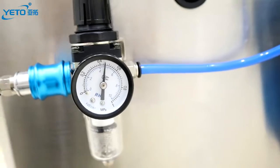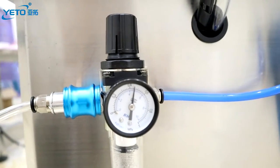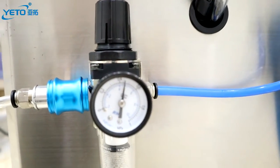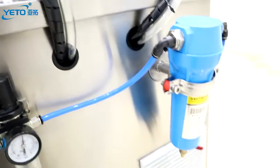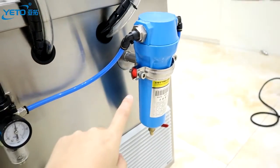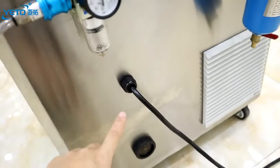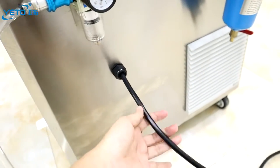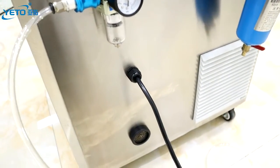The working pressure of this machine is 0.4 to 0.8 MPa. And this is the air filter. Here connect with electric power.